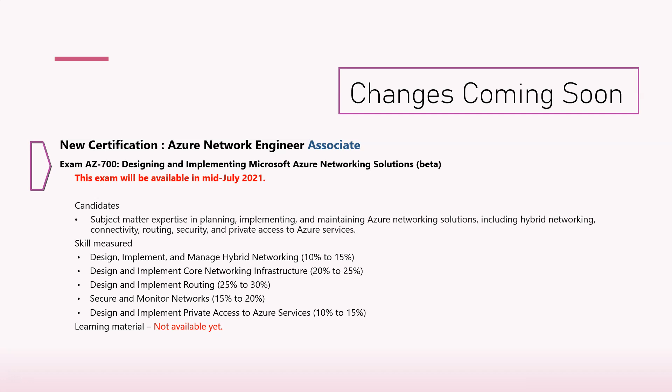For AZ-700, candidates should be subject matter experts in planning, implementing, and maintaining Azure networking solutions — covering hybrid networking, connectivity, routing, security, and private access to Azure services. This covers a lot for network engineers. The skills measured are listed, and I checked online — the learning material is not yet available, but I'll keep you updated with frequent update videos.